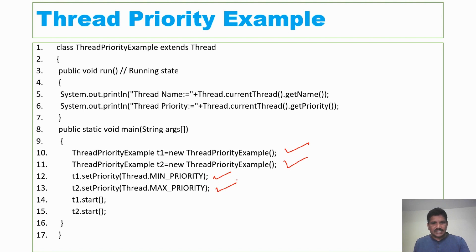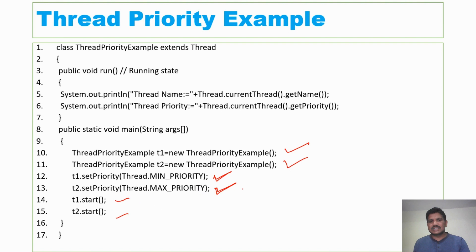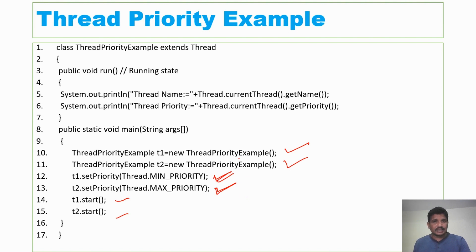If you want to assign a minimum priority, the first thread is assigned minimum priority and the second thread is assigned maximum priority. Once the threads have been started, the maximum priority thread will execute first, then the minimum priority thread.